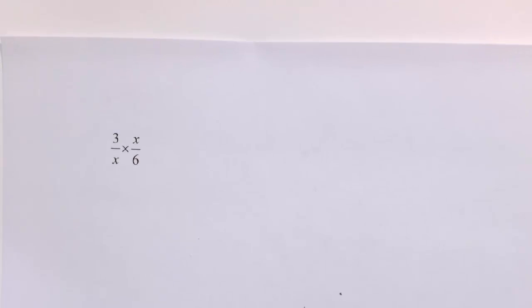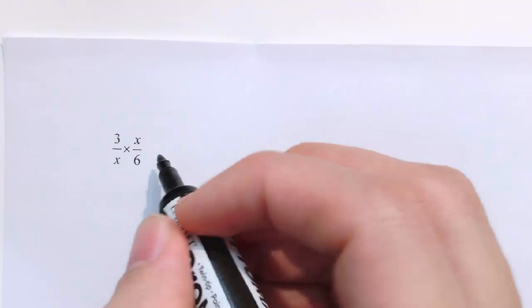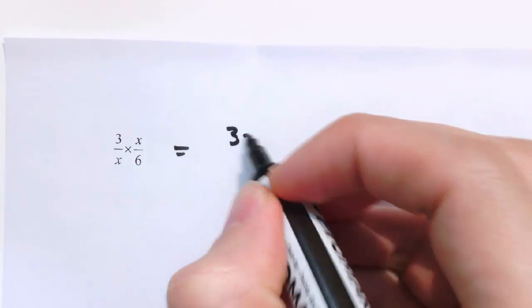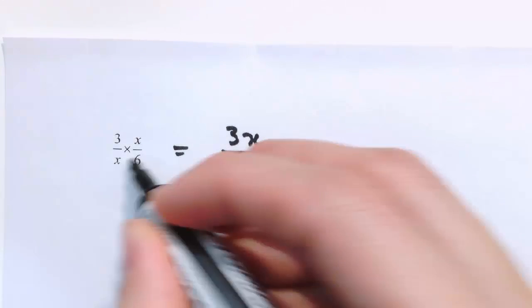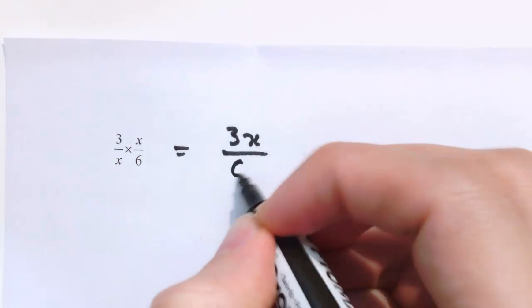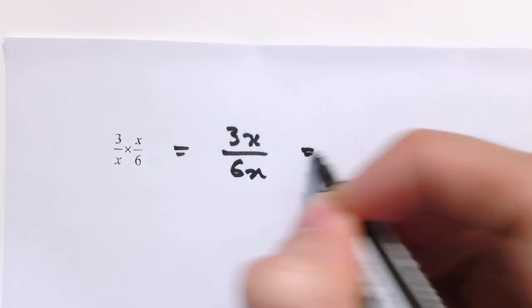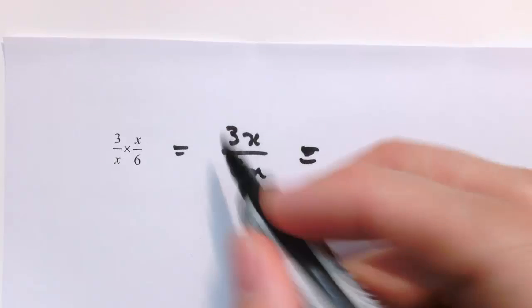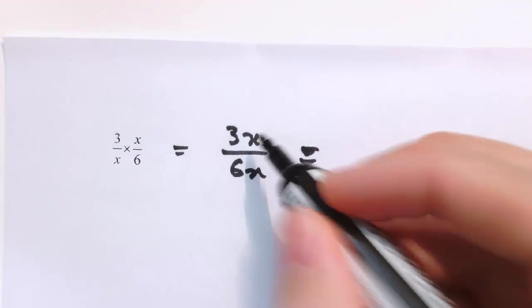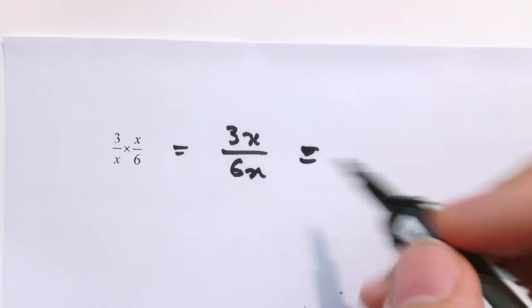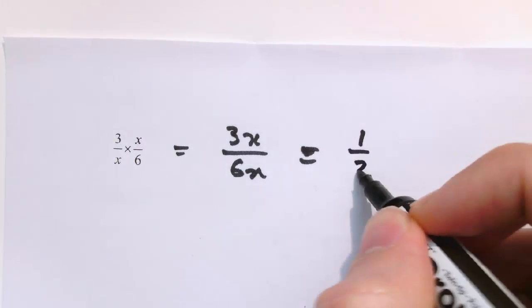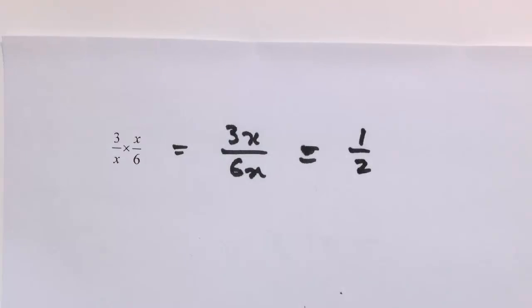Now let's do some algebraic examples. For 3/x times x/6, we multiply the numerators to get 3x and the denominators to get 6x. We always leave it in its simplest form, so we cancel the x and the factor of 3 to leave 1/2.